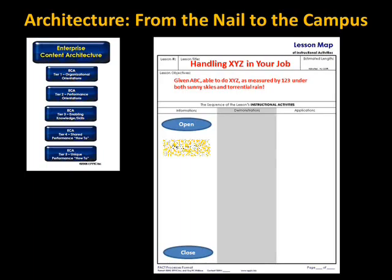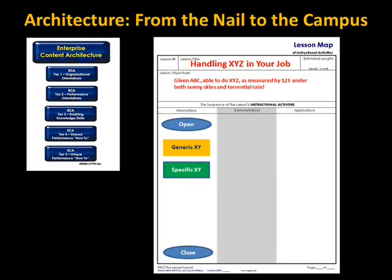In this case, perhaps there's information on generic XY, which would come from tier three. Then there's specific XY, which is in your job context, learner — this is how that plays out. So there's a generic part of XY and a specific part of XY.